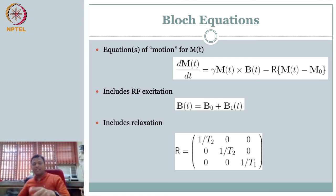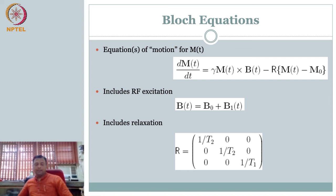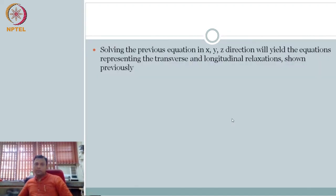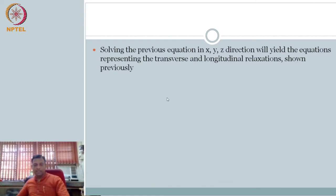There are a couple of examples in the textbook where the vectors are expanded into components and it shows for pi by 2 what is Mxy — please have a look at that. Solving the previous equations in all three different directions gives the equations we saw already, so please have a look at the textbook on this as well.